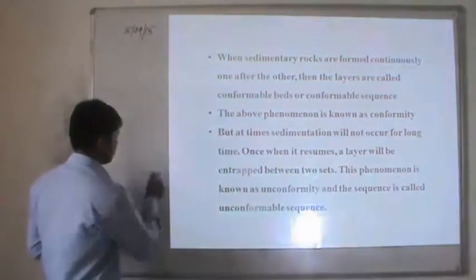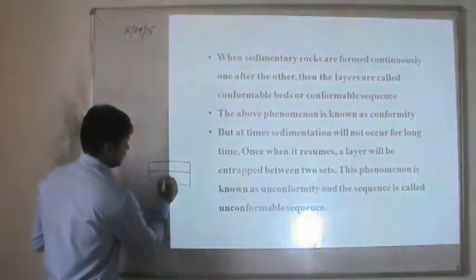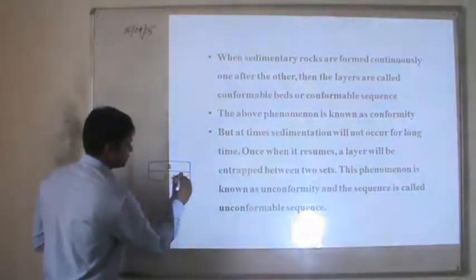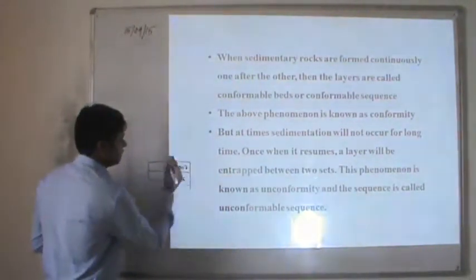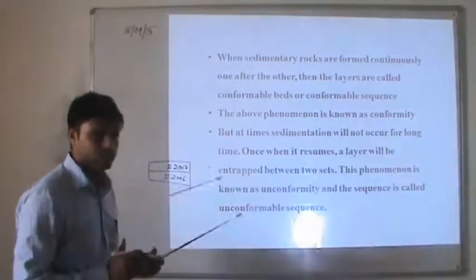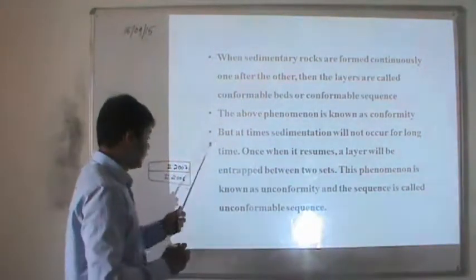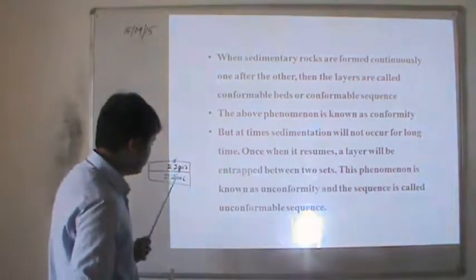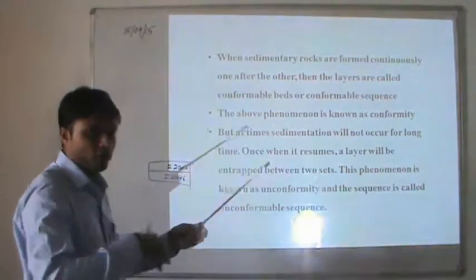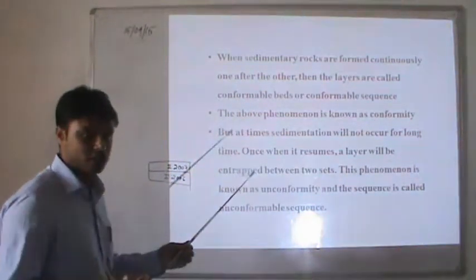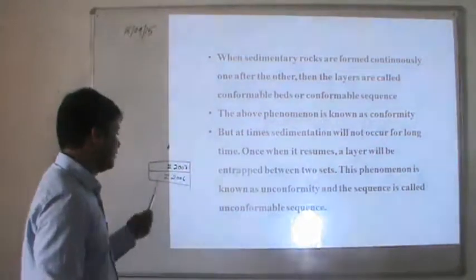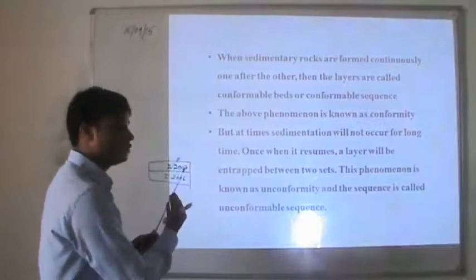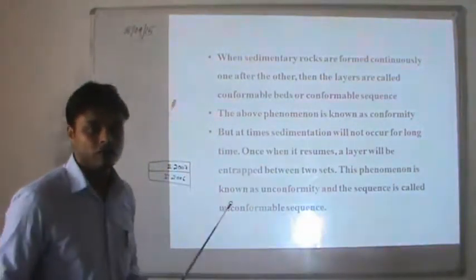For example, if a first and second bed formed in 2006 and 2007 respectively, these two beds formed in sequence, so they are conformable and in a conformable sequence. When beds are not formed in the given sequence of years, then they are known as unconformable beds, and the sequence is called an unconformable sequence.